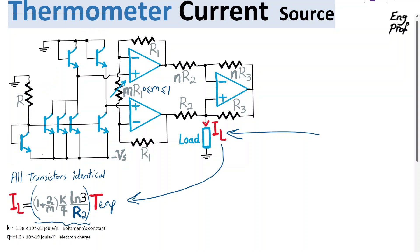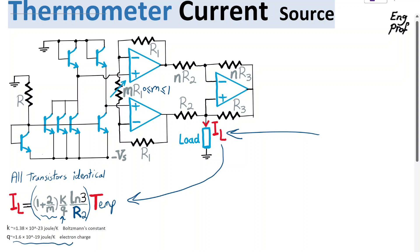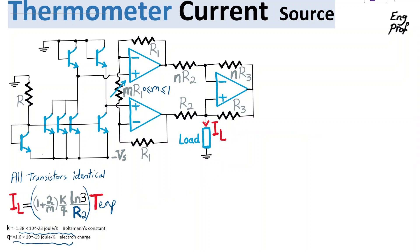The scale is very interesting: 1 plus 2 over M, in which M is the ratio of this potentiometer or variable resistor, where M is between 0 and 1. Q is the electron charge, K is Boltzmann's constant, ln3 is just the constant natural logarithm of 3, and R2 is the resistor we can select — it is our choice in the circuit, so we can control how we design.